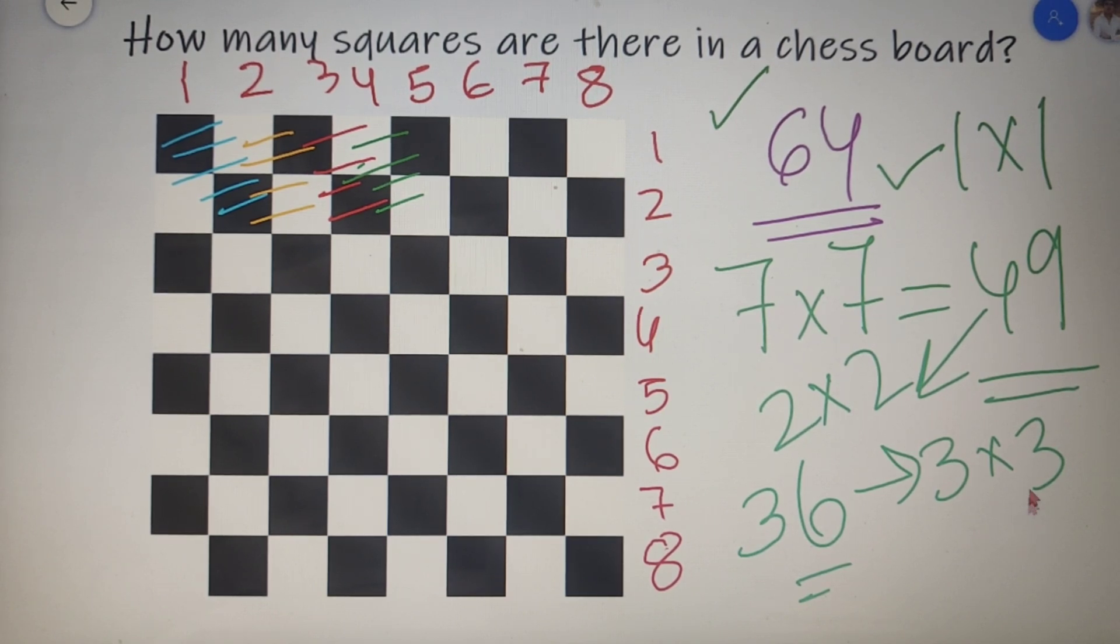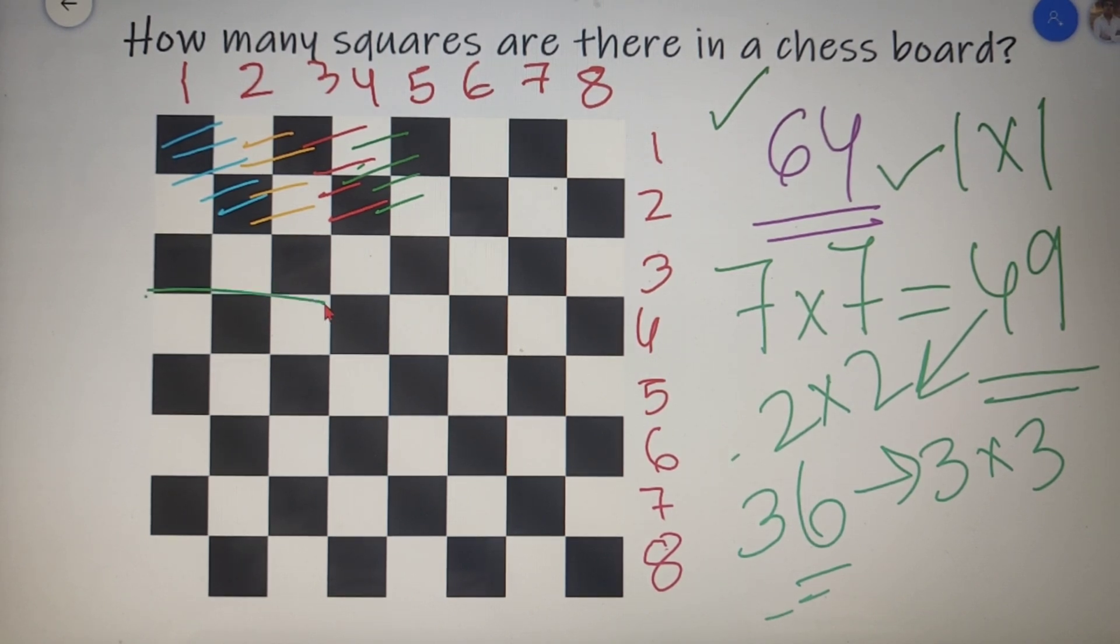So by following the pattern for 3 cross 3, we should get 36 squares. And that is indeed the case. Now if you start marking 3 cross 3 squares on the chessboard, you will find that going in this direction, you will get 6 squares and going in this direction, you will get 6 squares too. So in total, you will have 6 into 6 that is 36 squares of 3 cross 3.